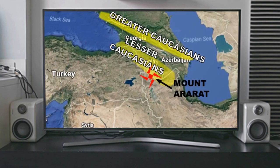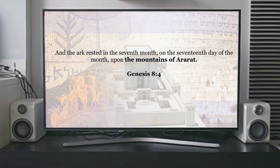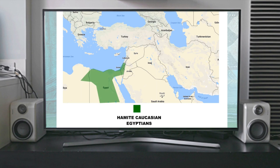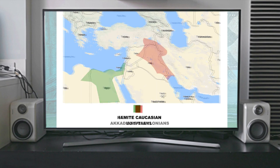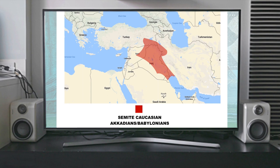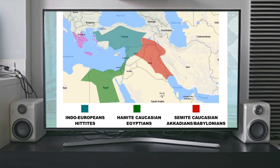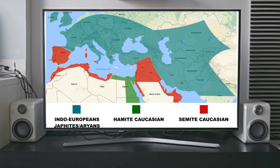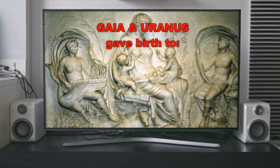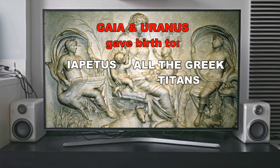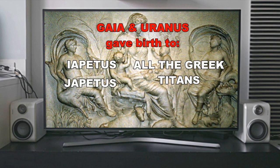The first three major empires after the flood were the Hittites in Anatolia, Egypt or Mizra who comes from Ham's son Mizraim, and the Semites from Shem, who ruled Mesopotamia after a Semite named Sargon of Akkad conquered Mesopotamia not long after the Bible says the flood happened. These kingdoms are recorded in secular history and the Bible fully backs this up. So the Aryans or Indo-Europeans represent the Japhites, and in Greek mythology two of the main gods who gave birth to all the gods were Gaia and Uranus, and they gave birth to a god named Iapetus or Japetus, who is also known as Japheth.